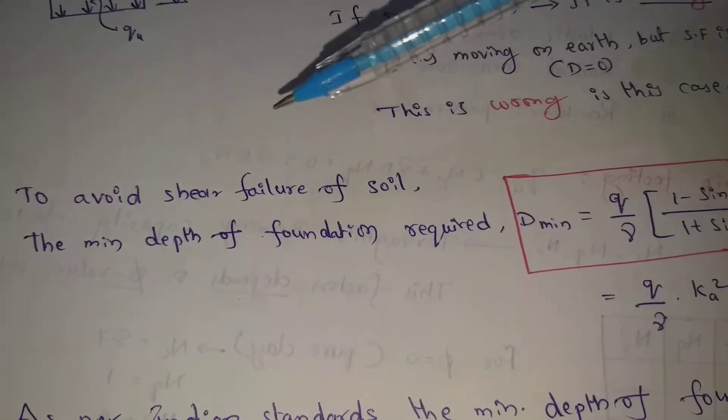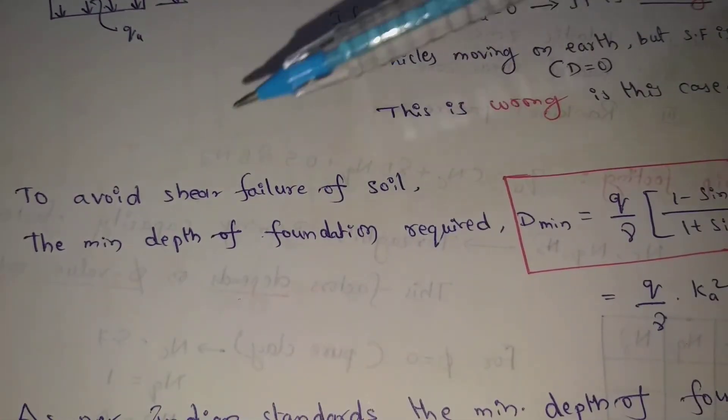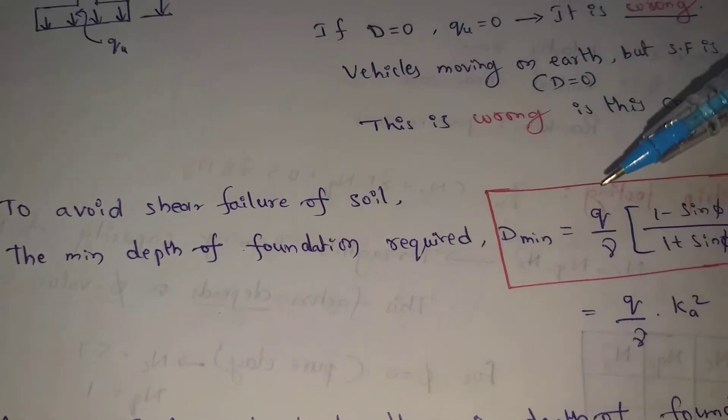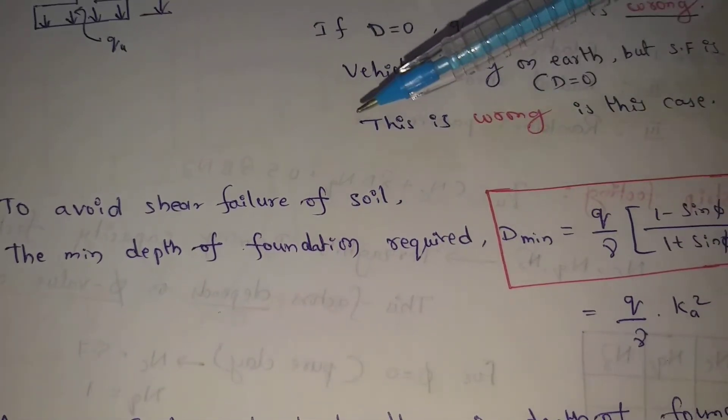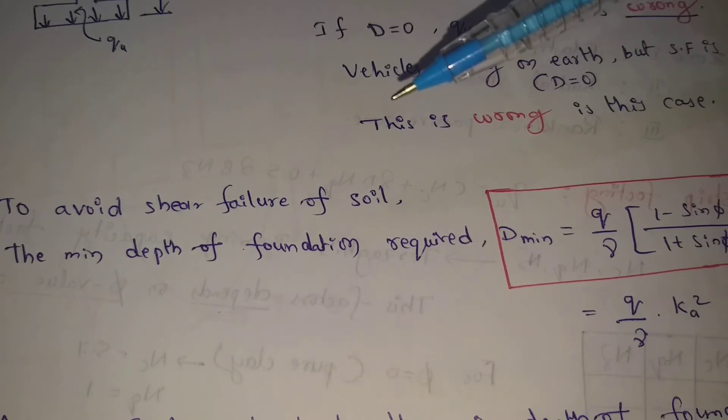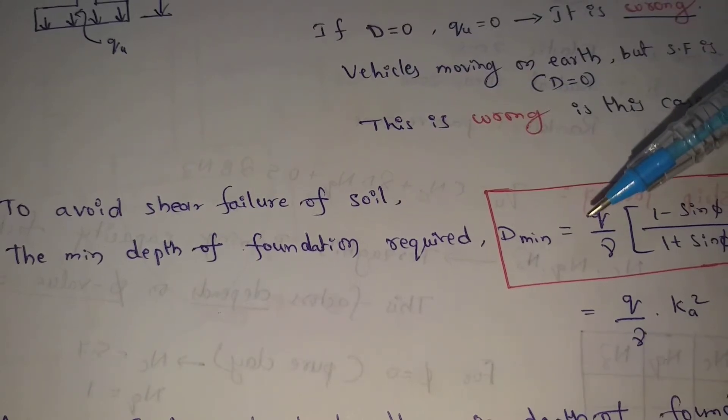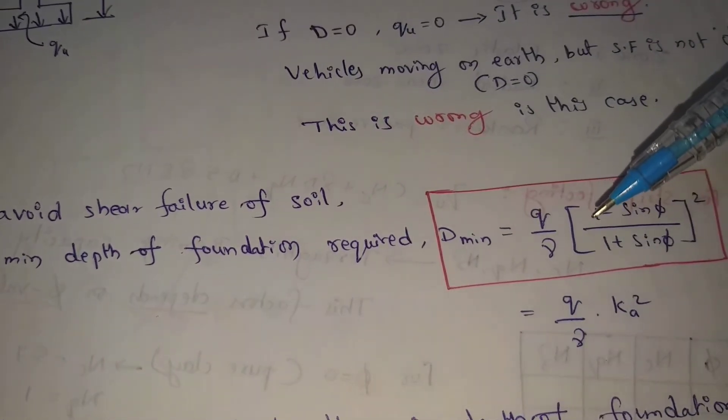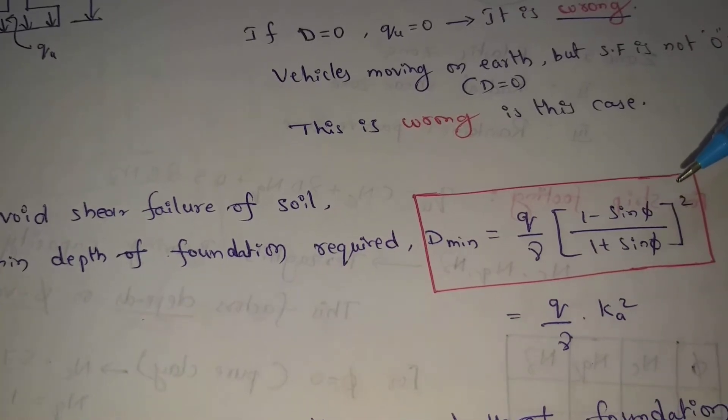To avoid shear failure of soil, the minimum depth of foundation required D minimum. D minimum value equal to Q by gamma (1 minus sin phi by 1 plus sin phi) whole square.